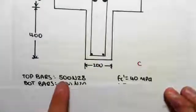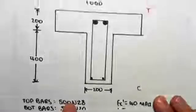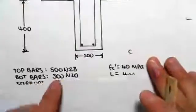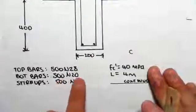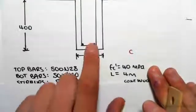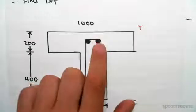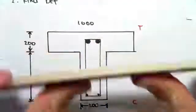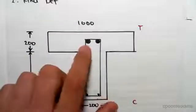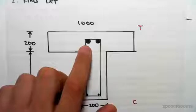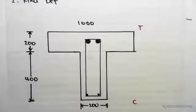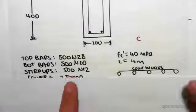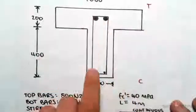Our top bars are 500 N28 — these N28 bars are much bigger than our bottom bars. The bottom bars are N20s. We have bigger top bars because that's where the tension is, and we need bigger bars to handle that tension. We also have something called stirrups.